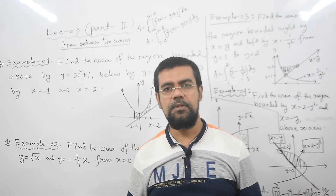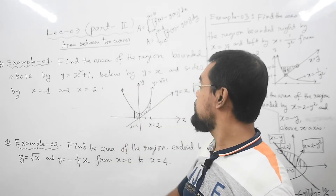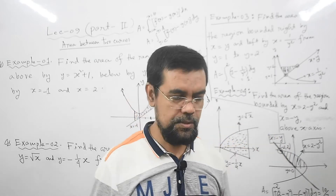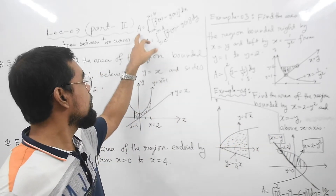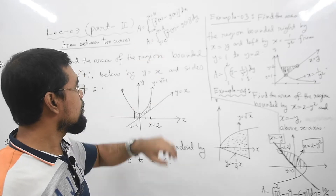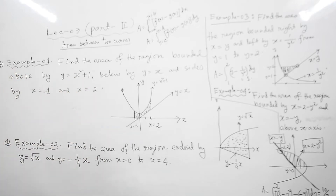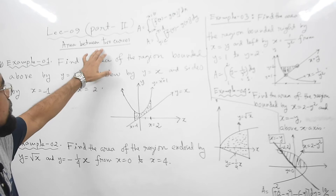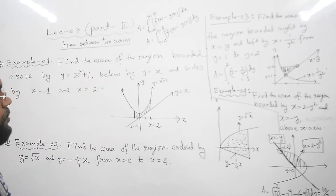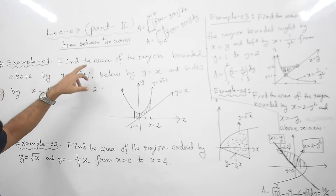Dear students and dear viewers, welcome to our lecture series of Calculus 2. Our today's topic is also area between two curves. In our previous lectures, lecture 8 we used Formula 1 and in lecture 9 part 1 we used Formula 2 in order to calculate area between two curves. In this lecture I will also calculate area between two curves quickly by using Formula 1 and Formula 2. Let us try to understand some examples.